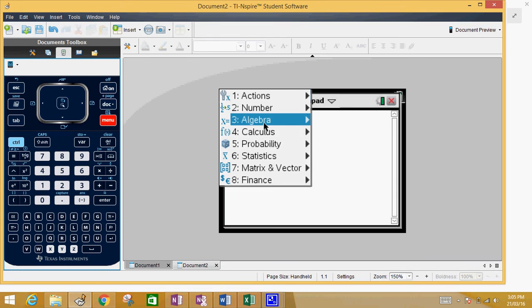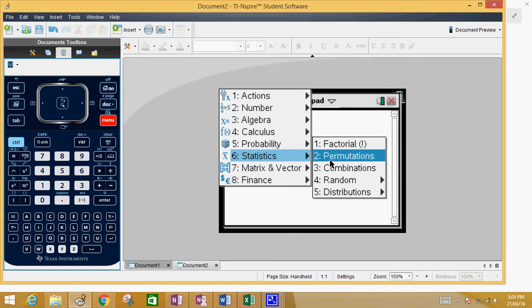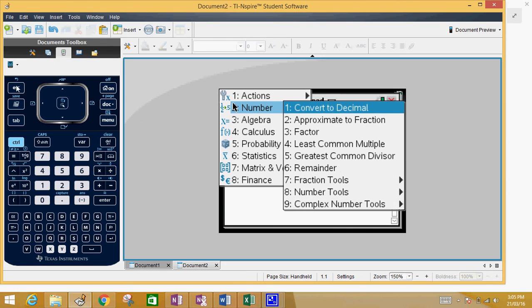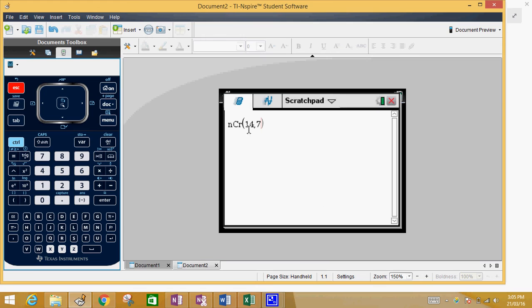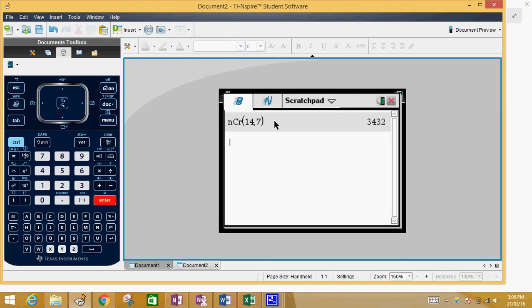So, if we are doing 14 choose 7. So, once again, it's menu, probability, and then combinations. Okay? So, let's get out of there. And if we got 14 choose 7, it's 3,432.